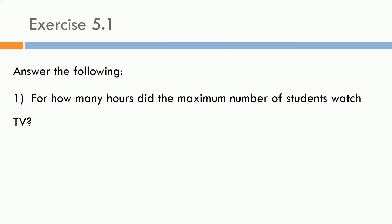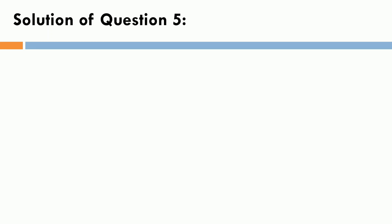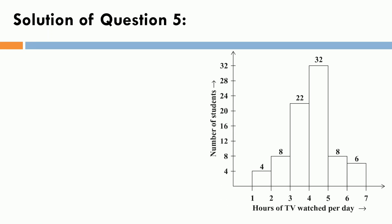So, let's see what are the questions. First one is, for how many hours did the maximum number of students watch TV? Second, how many students watched TV for less than 4 hours? Third, how many students spent more than 5 hours? So, let's see, what is the solution? Again, here is the graph. So, first answer is, the maximum number of students watched TV for 4 to 5 hours. Here, you can see, the bar which is between 4 to 5 hours is having the maximum height. So, here the answer is, the maximum number of students watched TV for 4 to 5 hours.